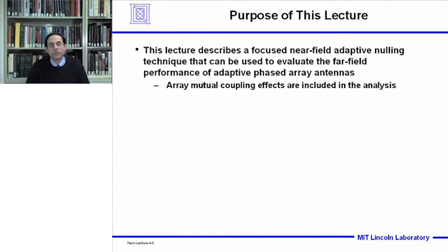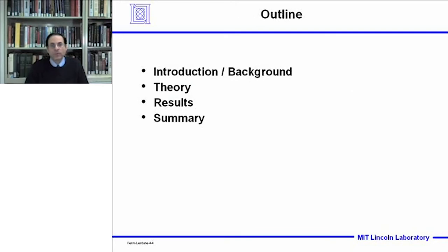The purpose of this lecture is to describe a focus near field adaptive nulling technique, which was discussed in lecture number three. It's a technique used to evaluate the far field performance of an adaptive phased array antenna. In lecture three, the analysis did not include array mutual coupling effects, which will now be included here. After a brief introduction and background, I'll describe the theory, show results for single and multiple jammers under near field and far field conditions, and then summarize.